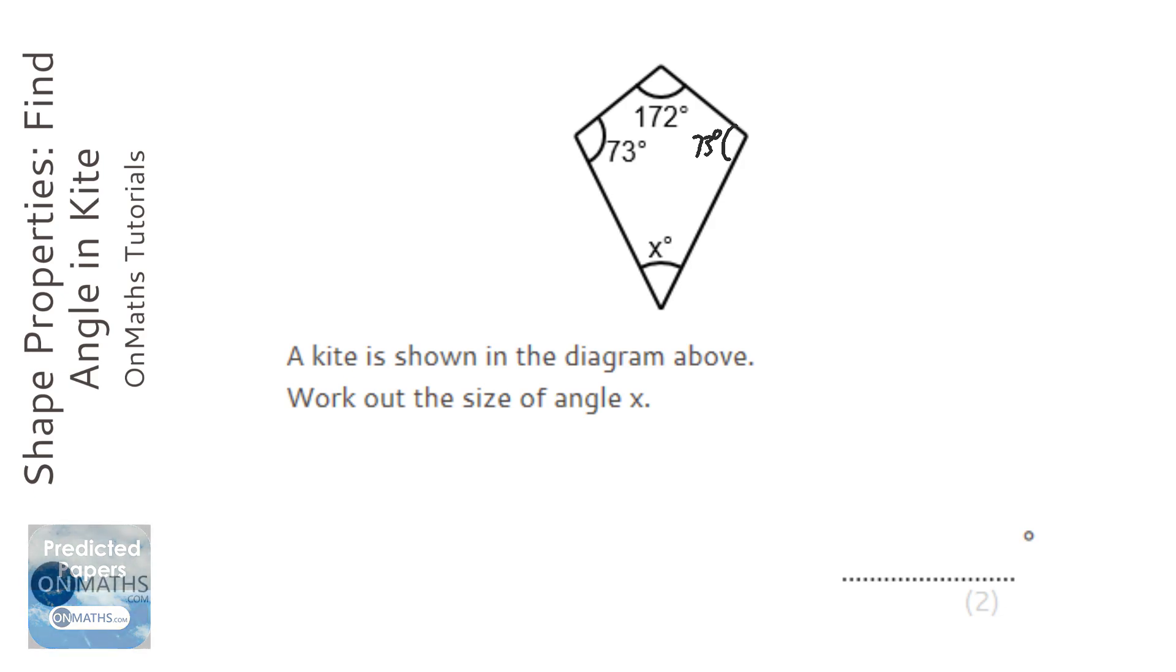And obviously it's a quadrilateral, so if we did 360 and take away the ones that we know, so plus 172 plus 73, then that will equal x.